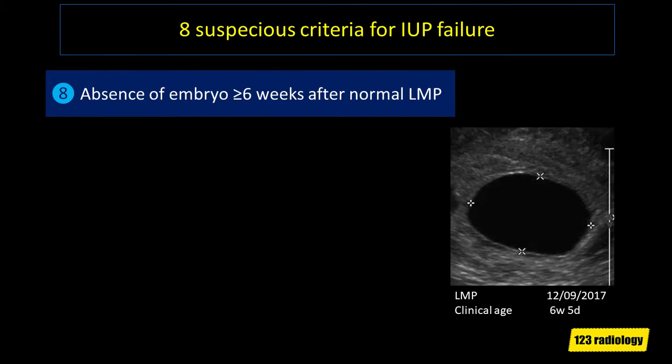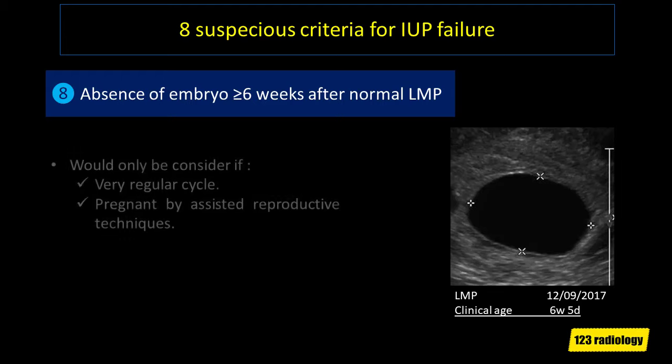The eighth suspicious criterion is absence of embryo at 6 weeks or more after the last normal menstrual period. This would only be considered if there is a reliable history with very regular cycles, or if the patient became pregnant by assisted reproductive techniques.